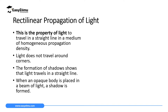Rectilinear propagation of light is a property of light — specifically, that light travels in a straight line. For light to travel in a straight line, it must be traveling in a medium of homogeneous optical density. Entirely in this topic, we are going to study this property of light: light traveling in a straight line in a homogeneous optical density or propagation density.